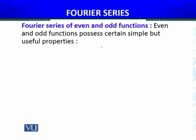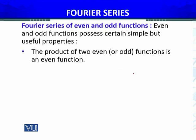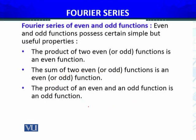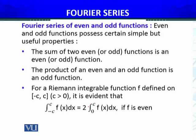Fourier series of even and odd functions. Even functions: if you replace x with minus x in f(x), the answer is still f(x). Odd functions: f(minus x) equals minus f(x). Not every function is even or odd — there are also functions that are neither even nor odd. The product of two even or two odd functions is an even function. The sum of two even functions is even, and the sum of two odd functions is odd. The product of an even and an odd function is an odd function. All of these can be proved easily.